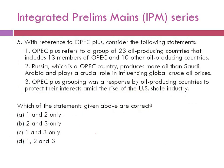Question number five: With reference to OPEC+, consider the following statements. Statement 1: OPEC+ refers to a group of 23 oil-producing countries, including 13 OPEC members and 10 other oil-producing countries. Statement 2: Russia, which is an OPEC country, produces more oil than Saudi Arabia and plays a crucial role in influencing global crude oil prices. Statement 3: OPEC+ grouping was a response by oil-producing countries to protect their interest amid the rise of the US shale industry.